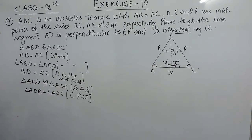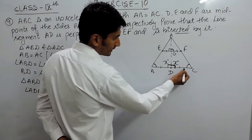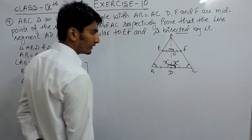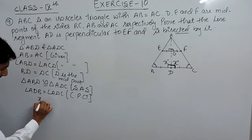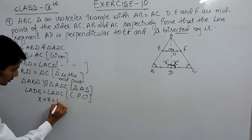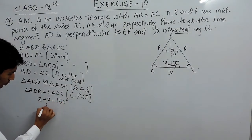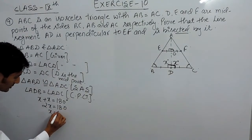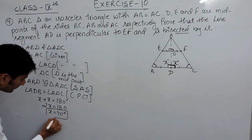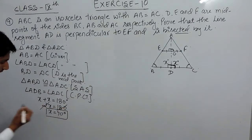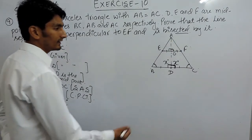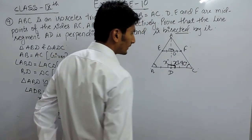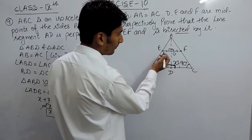These two angles are equal, and since BC is a straight line, this angle plus this angle must equal 180 degrees. So angle X plus angle X equals 180 degrees, meaning twice X equals 180 degrees, and therefore X equals 90 degrees.